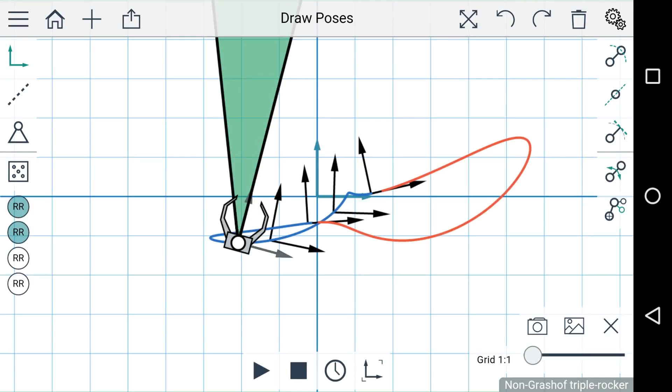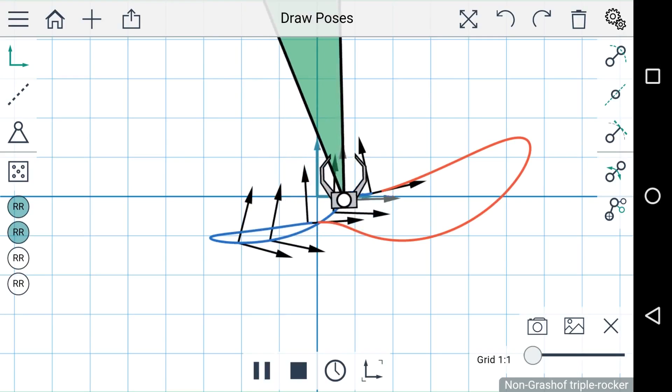These are all the available dyads that have been generated. The first two are automatically selected, but you can choose any two dyads to give you a four-bar linkage that solves this problem.